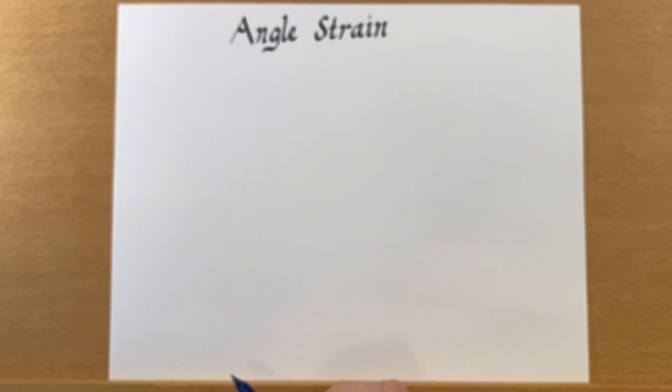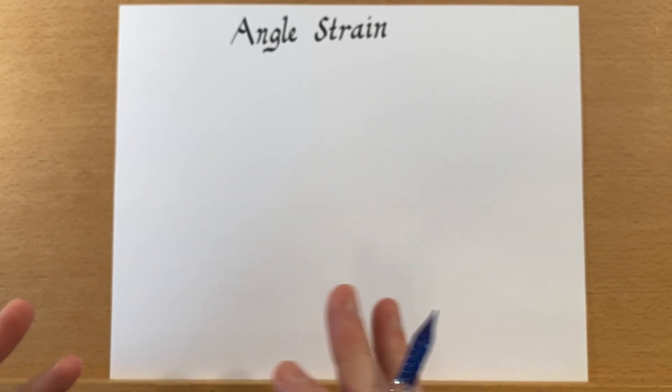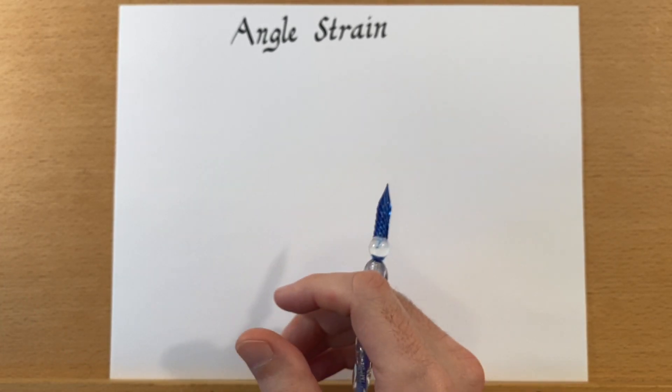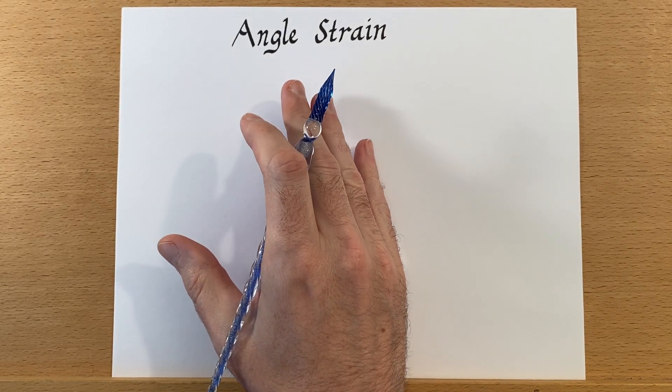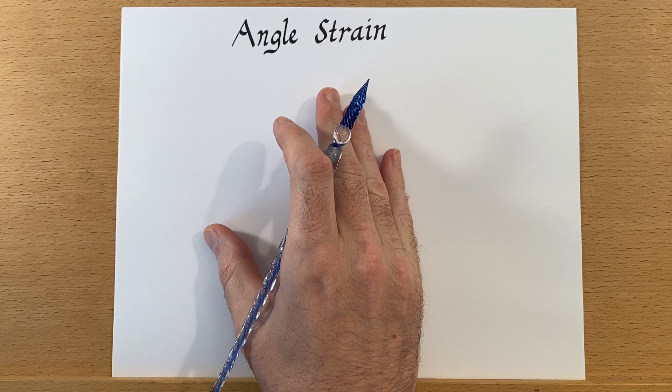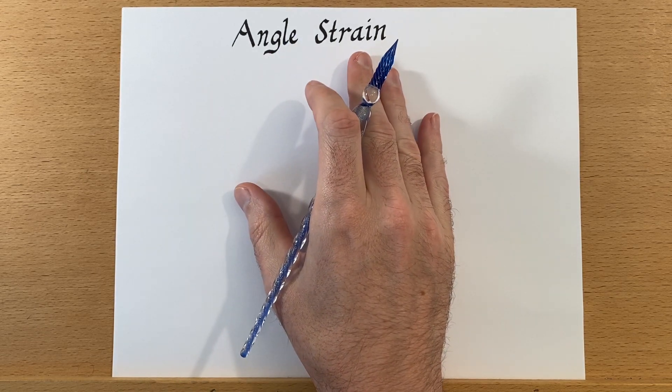Now that we just finished talking about VSEPR and the bond angles that we expect out of organic molecules for a given number of bonds around each atom, we can talk about an important concept that comes up in organic chemistry, and that's angle strain.